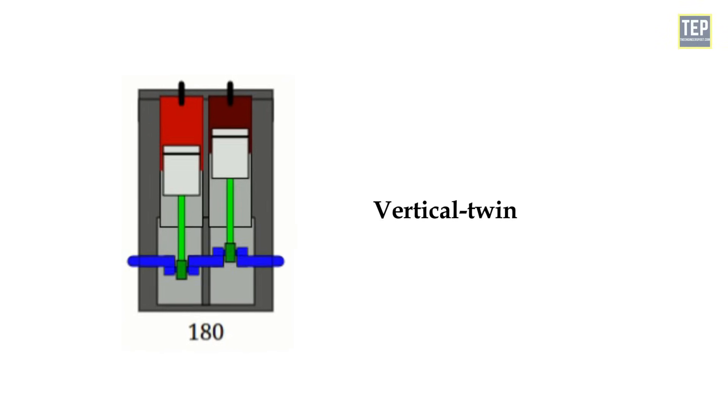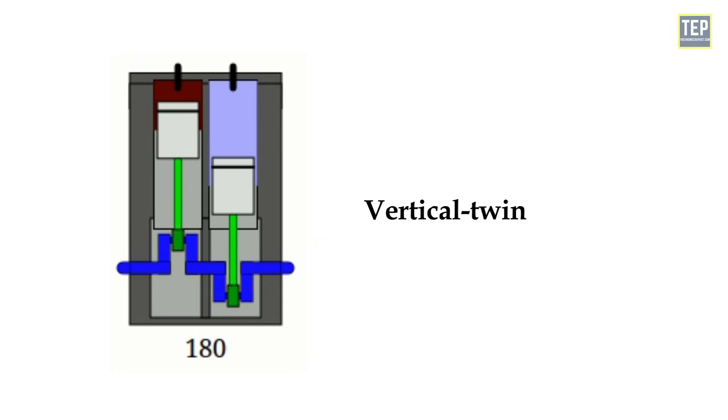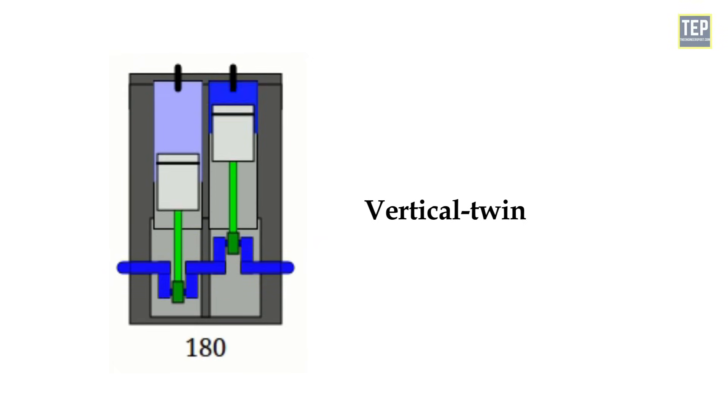Vertical twin was used to describe engines with a crankshaft angle of 180 degrees, which causes the pistons to travel in opposite directions.